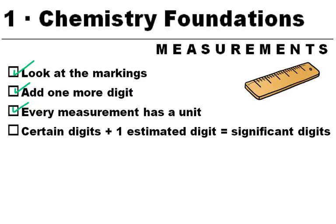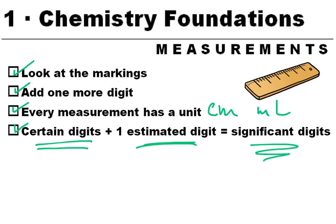Every measurement, remember, has a unit like centimeters or milliliters. And if it comes up, then you have all your certain digits based on the markings, one estimated digit where you have to do that, and then those together are the significant digits.